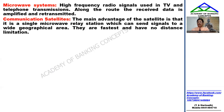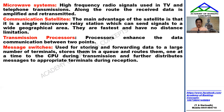A repeater receives the data, amplifies it, and retransmits it in the microwave system. The main advantage of satellite communication is wide geographical coverage. The signal from India is transmitted to the satellite and reflected back to the destination. The satellite provides accurate point-to-point transmission.